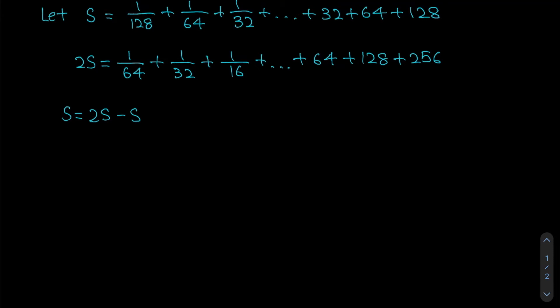So what can we do over here? If we say that S equals 2S minus S, what we are saying is that this equals 2S, which is what we have worked out, 1 over 64 plus 1 over 32, plus 1 over 16, plus all the way until 256.